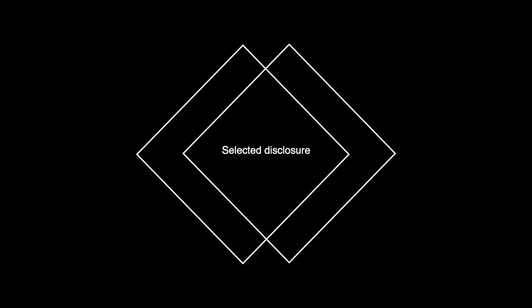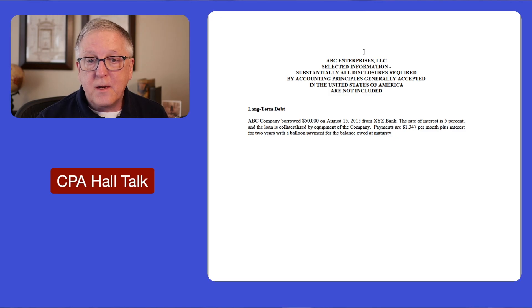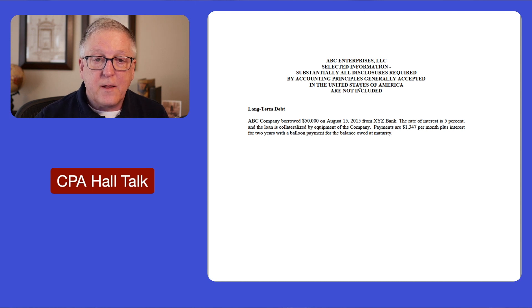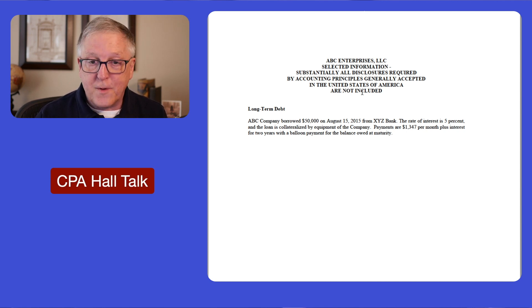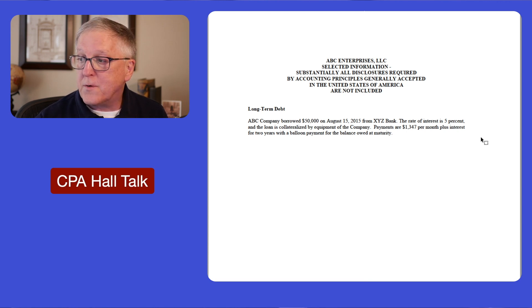Here you see the selected disclosure. In a preparation engagement — or compilation for that matter — you can add a selected disclosure, and it looks like this. This is where you're disclosing maybe one or two items. Notice in the heading we say 'substantially all disclosures required are not included,' because substantially all of the disclosures are not included — we just have this one disclosure here.